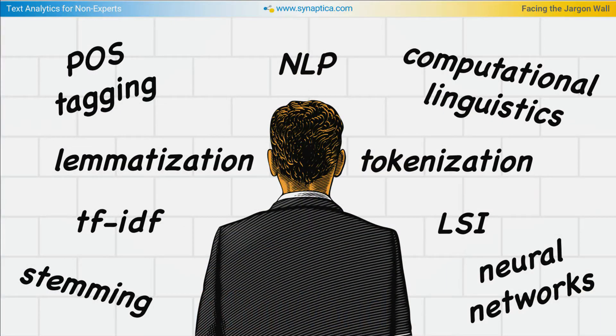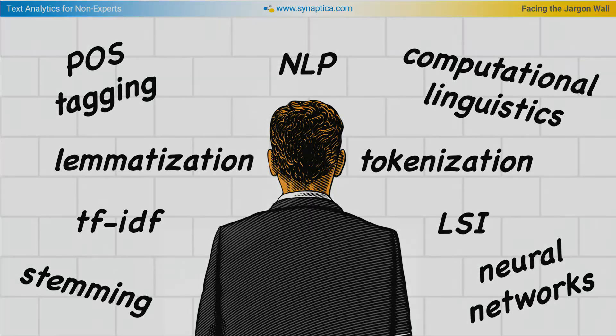So, text analytics for non-experts. Synaptica is actually a latecomer into the world of text analytics. We have over two decades' experience in the field of taxonomies and ontologies, both software and also building taxonomies and ontologies in fairly large-scale projects and large-scale indexing projects. For the last couple of years, we have been developing text analytics solutions based on open-source software — things like Stanford NLP, OpenNLP, and Gate, which is produced by Sheffield University.